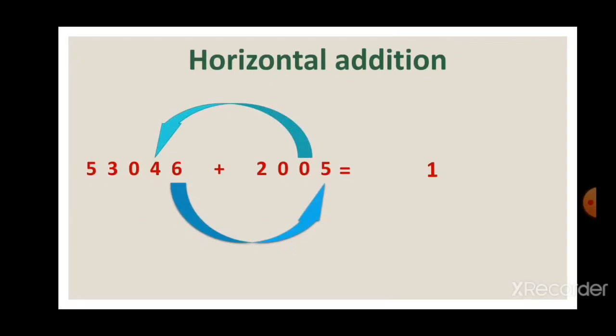Next, the tens place: 4 tens plus 0 tens is 4 tens, and the 1 we kept in mind gives us 4 plus 0 plus 1, making 5 tens. So we write 5 in the tens place. Now moving to the hundreds place: 0 hundreds plus 0 hundreds gives 0, so we write 0 in the hundreds place.